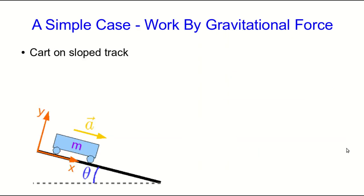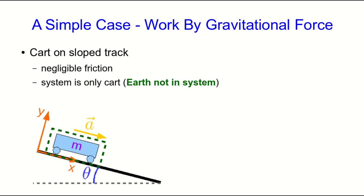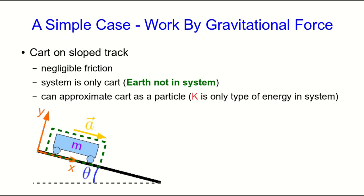To think about this we'll consider one of the simplest cases: a cart on a sloped track. The forces are all constant and acting in constant directions relative to the motion, and it's a nice simple situation that could in principle be set up in the lab. We're dealing with negligible friction, our system is only the cart, and the earth is not in the system. We can approximate this cart as a particle.